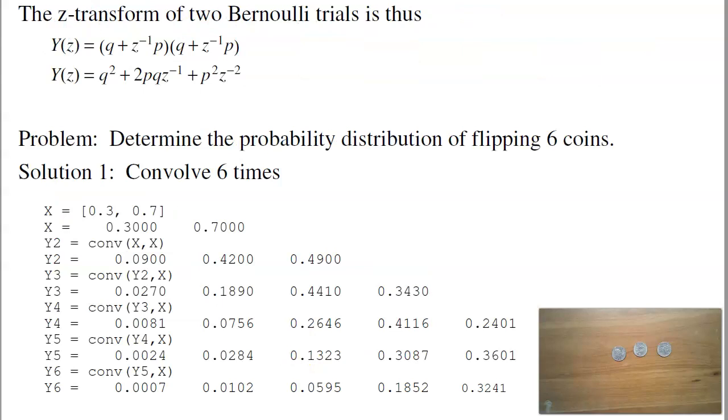The Z-transform of two Bernoulli trials is q plus 1 over Zp. When I convolve these together, I'm multiplying polynomials. That's why the Z-transform, multiplying Z-transforms, is actually the convolution of the PDFs. With that, I can use MATLAB to say what's the probability of rolling a single die? Two dice, three dice, four dice, five dice, six dice, or six coins. And I can get the PDF, or any number of tosses that you want.